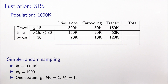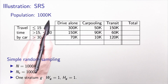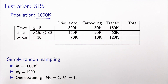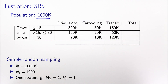I would like now to illustrate the sampling strategies on a concrete example. I will use again this transportation mode choice example with three alternatives and three categories for the exogenous variable. I will assume that I know the full population, so I have a population of one million individuals, and they are distributed across the cells as described in this contingency table.